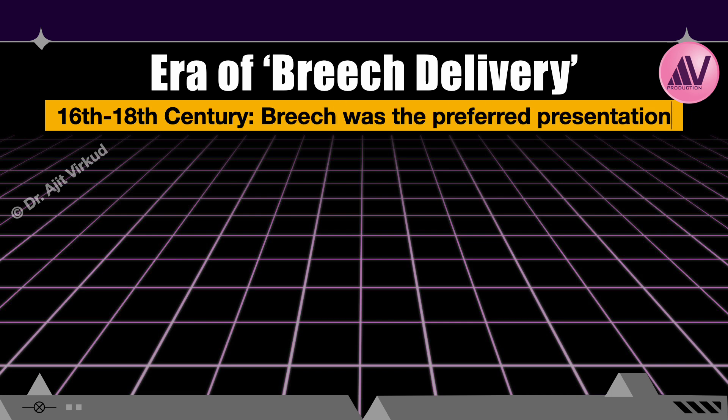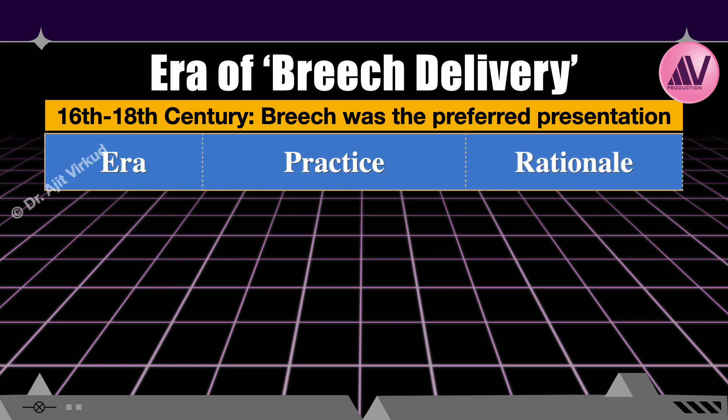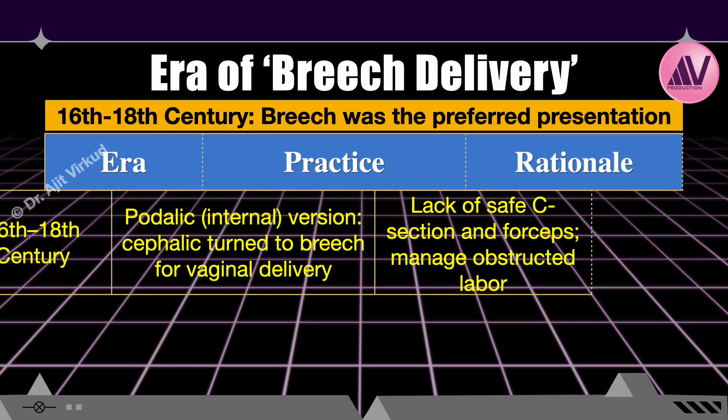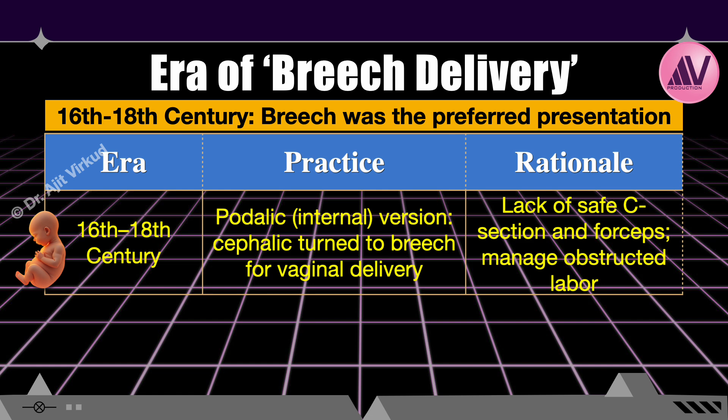This practice, known as podalic version or internal version, emerged during the 16th to 18th centuries, commonly referred to as the age of podalic version or breech era. It was particularly prevalent in cases of transverse lie or obstructed labour, but also employed in instances of cephalic presentations where vaginal delivery was deemed challenging. The rationale stemmed from the limited availability of effective anesthesia, antibiotics, and safe cesarean sections. Obstetric forceps was not widely available until the 18th century.